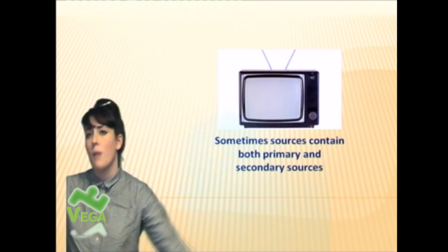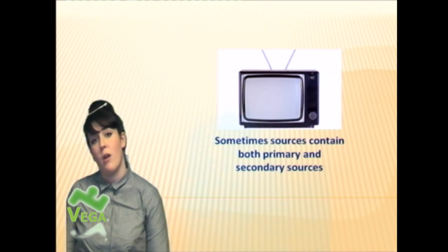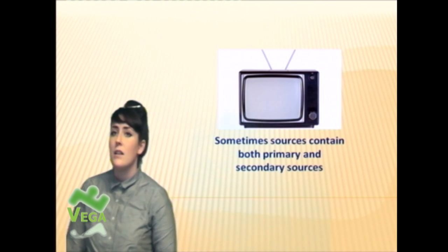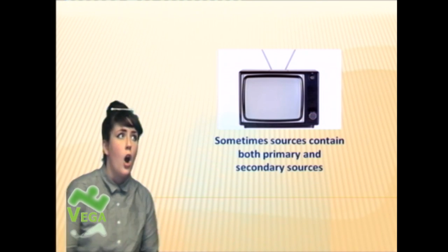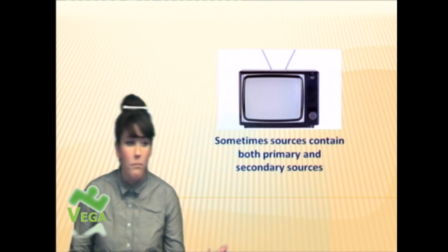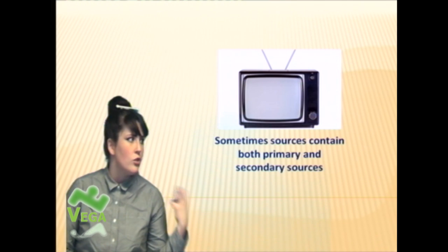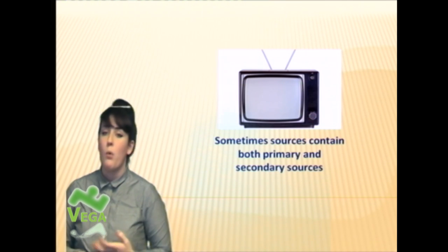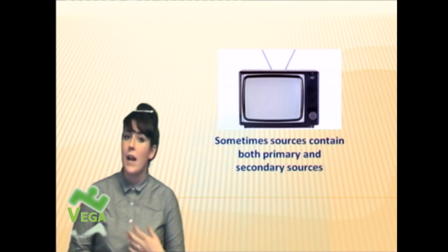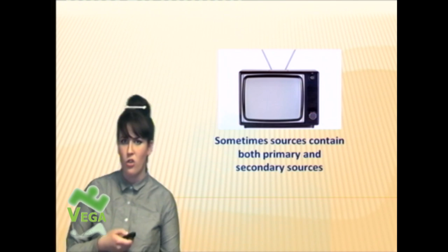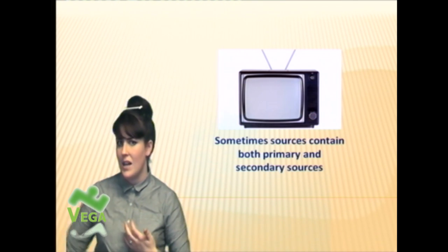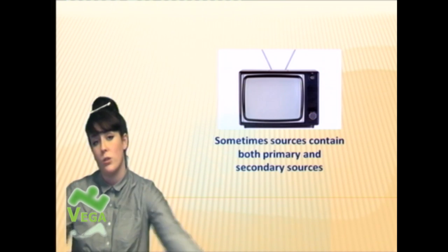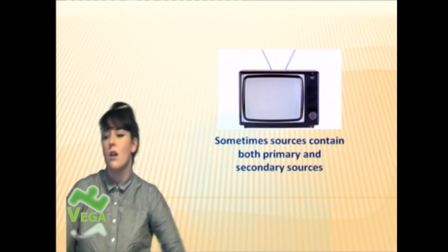Sometimes sources can contain both primary and secondary. So if you are watching a documentary, it might have original footage of an event and it might have objects, but it will also have secondary sources, which include interviews of historians or scientists. So it'd be a real mixture. The documentary itself will also count as a secondary source.